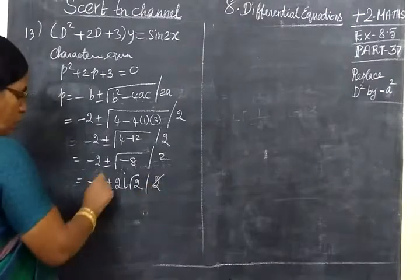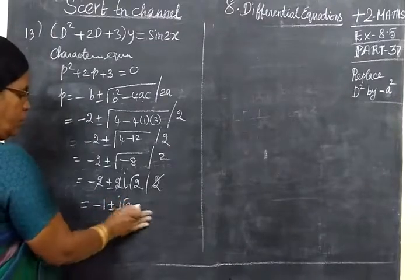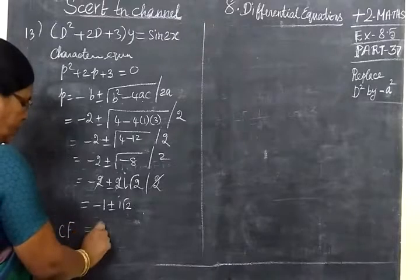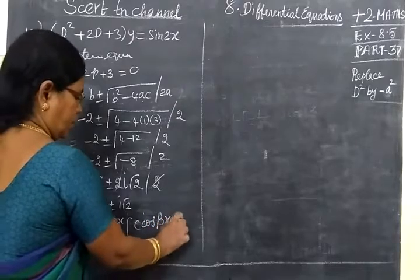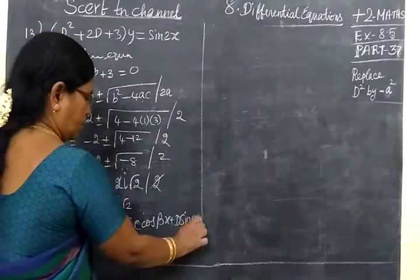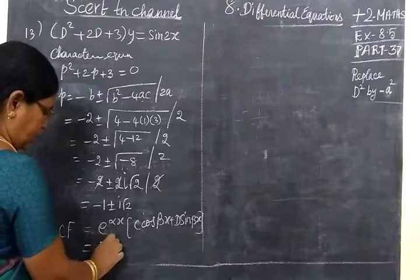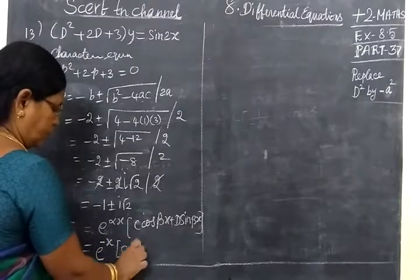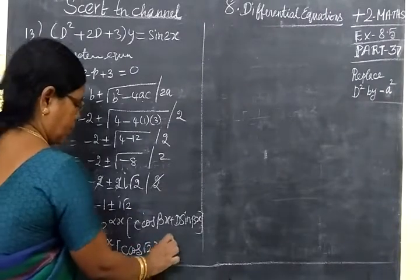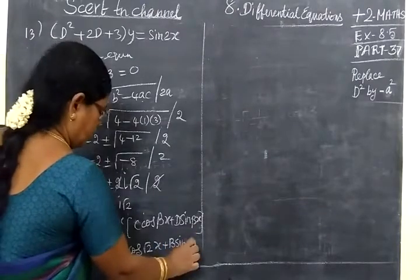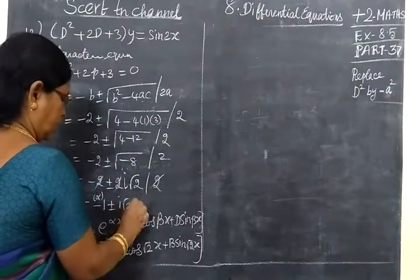Then the whole by 2, all the common 2 will be getting cancelled. So -1 ± i√2. So what is the complementary function? e^(αx)[C cos(βx) + B sin(βx)]. So this is equal to e^α is -1, so -x, then C cos β is √2. So √2x plus B sin √2x. So this is alpha and this is beta.